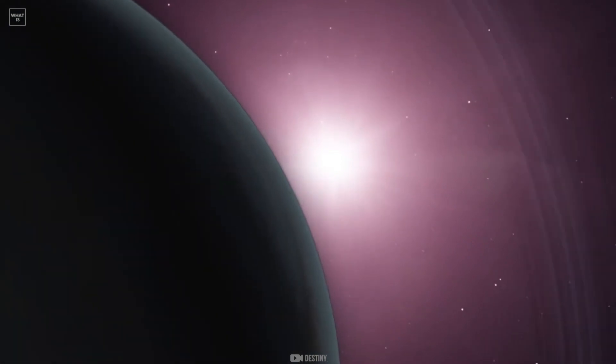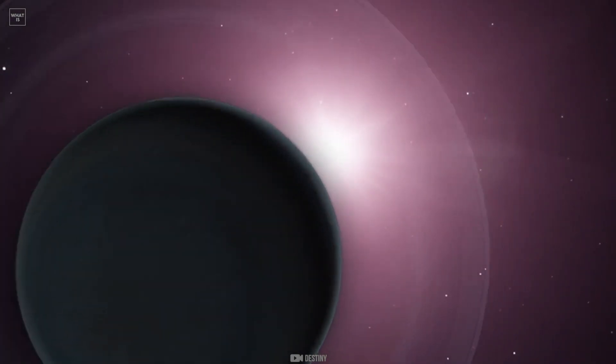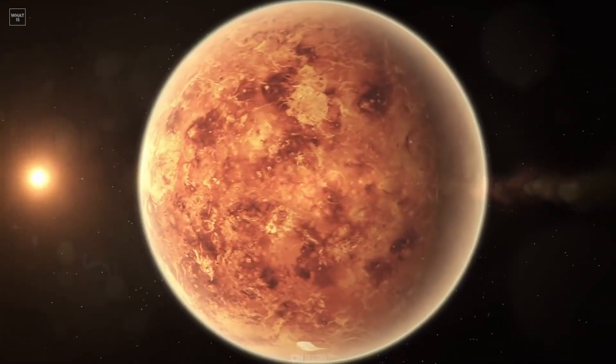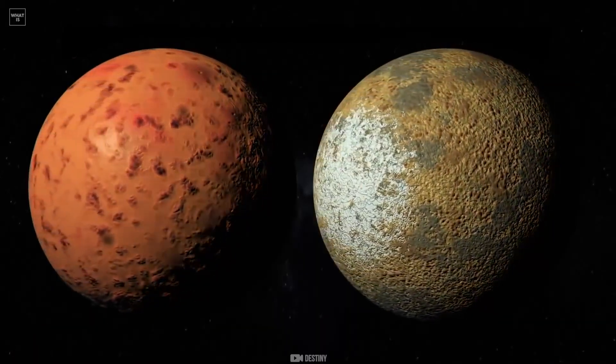Our sun is brighter and more massive than 95% of the stars in our galaxy, and about half of all its stars exist in the form of systems of two or more stars.